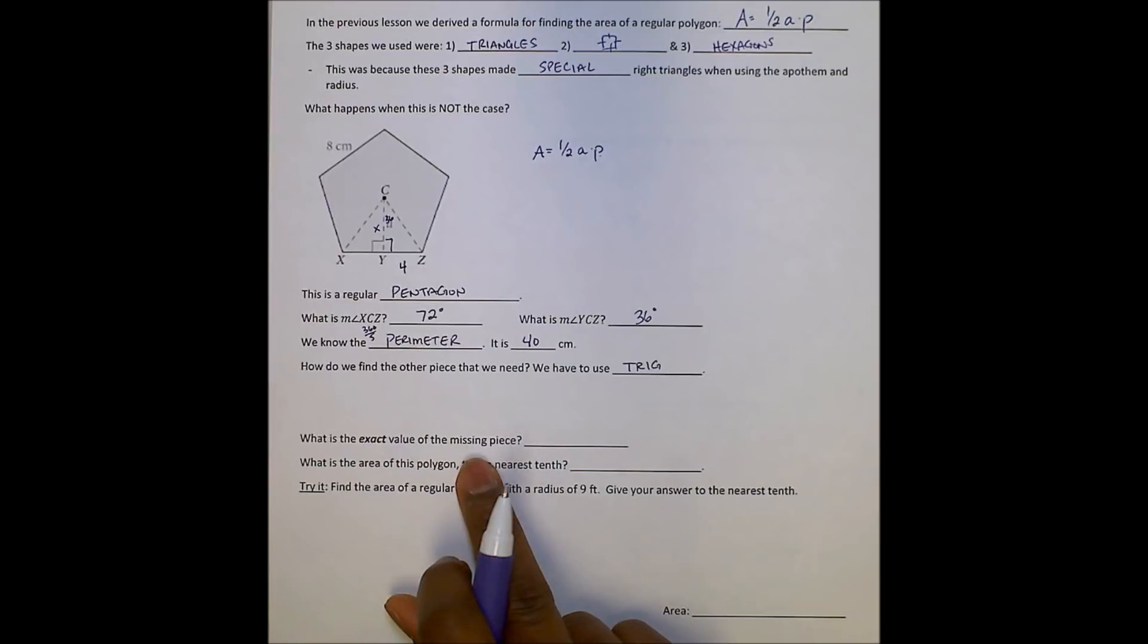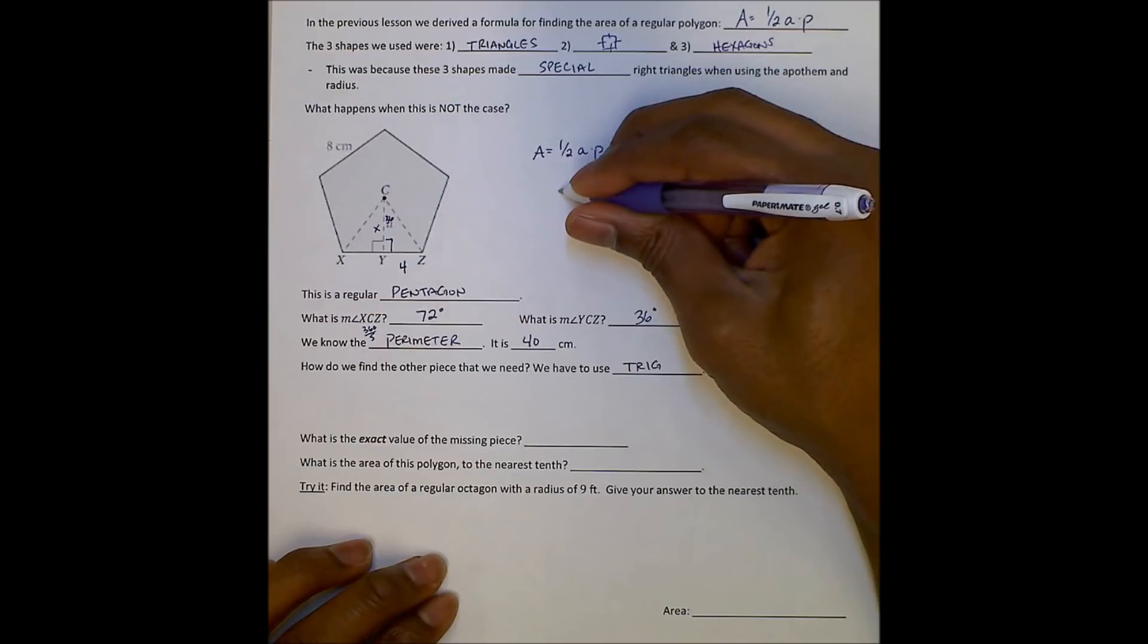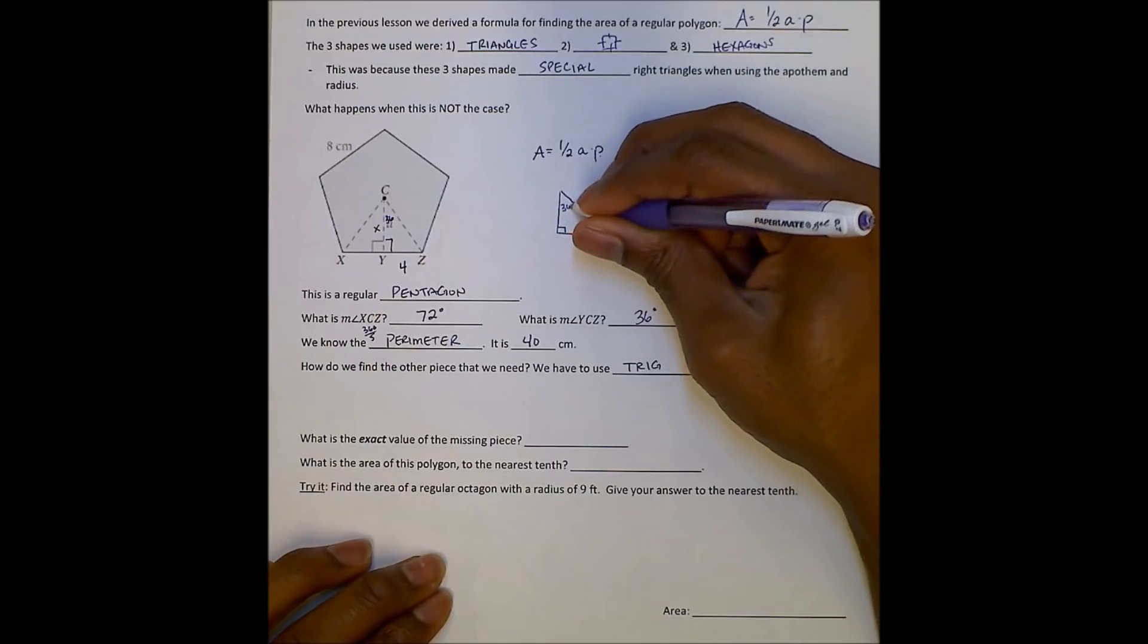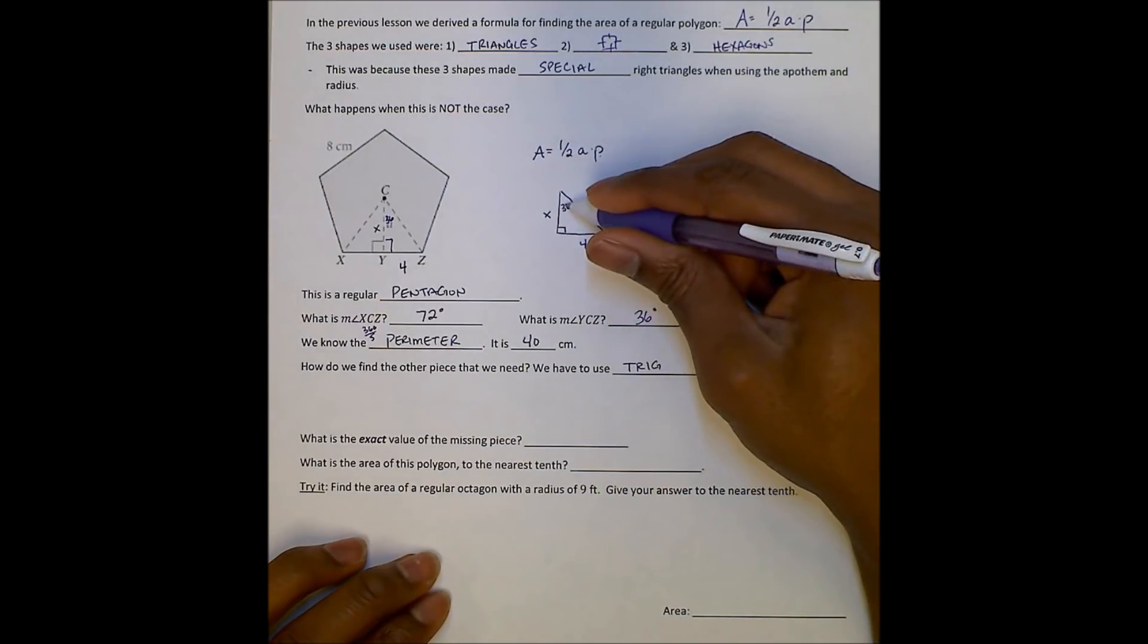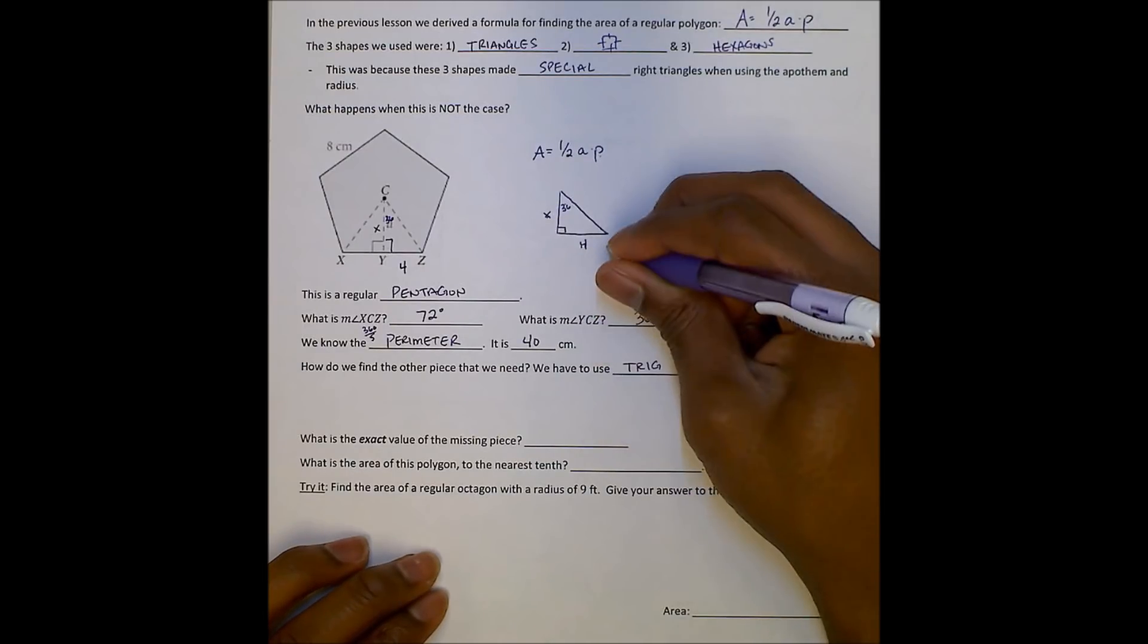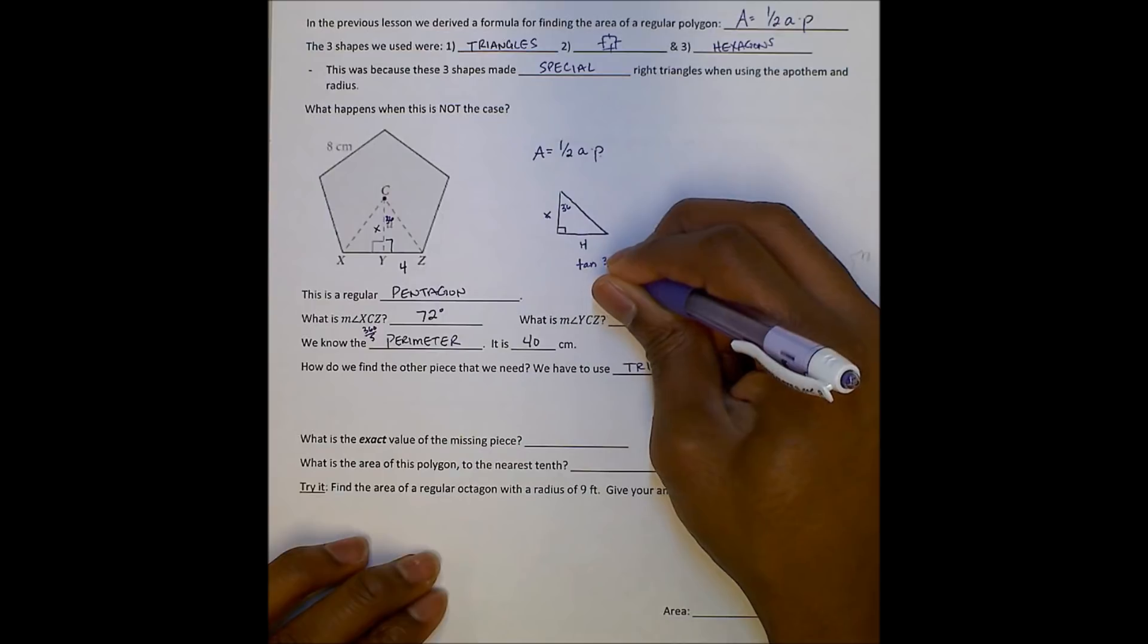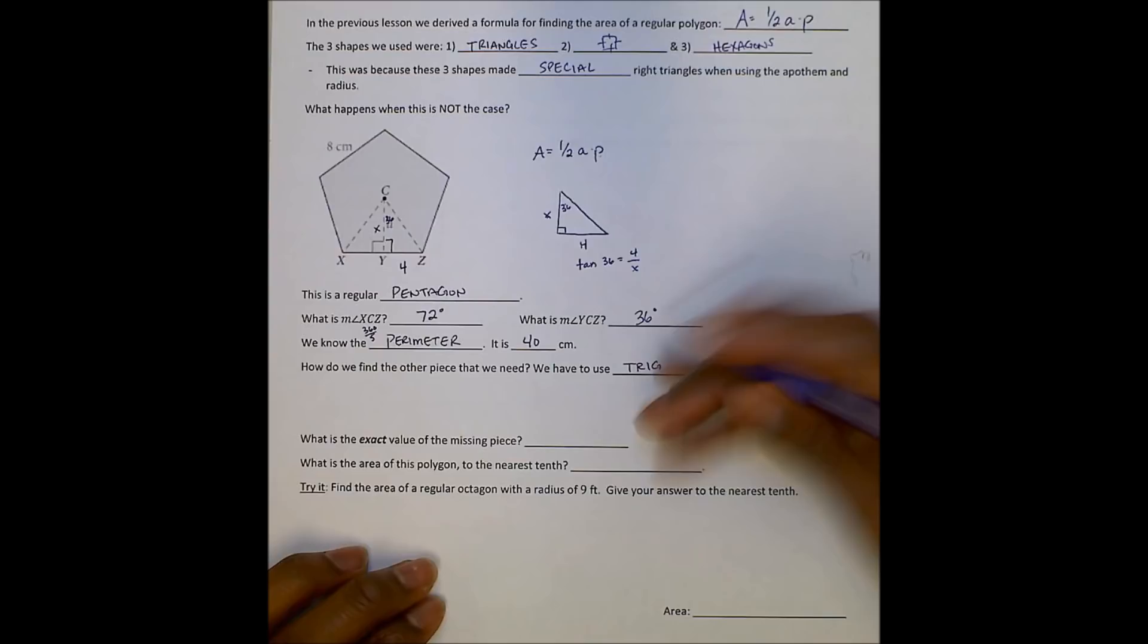So what's the exact value for this missing piece? Well, we can find that exact value by solving the triangle with trig. And so what we know then, we know this is 90, we know this is 36. I want to find X. I know this is 4. So in order to find X, I'm going to use my trig, my SOHCAHTOA. So I have the opposite side and my adjacent side. So I can say tangent, I'll write it here. Tangent 36 equals opposite 4 over adjacent X. And now I have to solve for X.